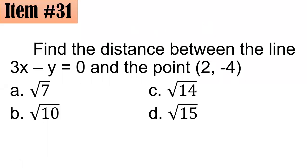Let's move on to item number 31. Find the distance between the line 3x minus y equals 0 and the point 2, negative 4. Did you go for square root of 7, square root of 10, square root of 14, or square root of 15?